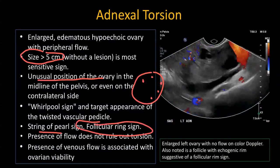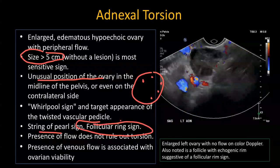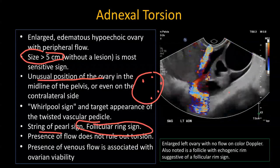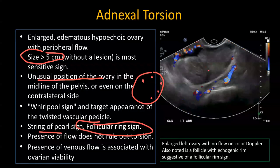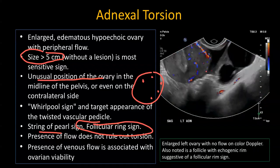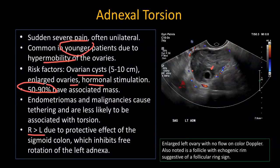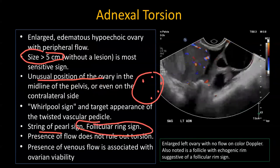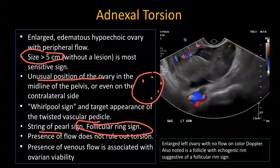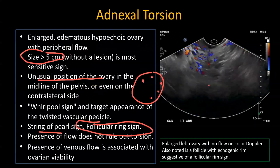The follicular ring sign is an interesting finding seen in many cases of ovarian torsion. Normally, ovarian follicles do not have perceptible walls. But in torsion, edema and hemorrhage cause an echogenic rim around the ovarian follicles — this is known as the follicular ring sign, and it is fairly specific for torsion. Along with enlarged size, look out for this sign.